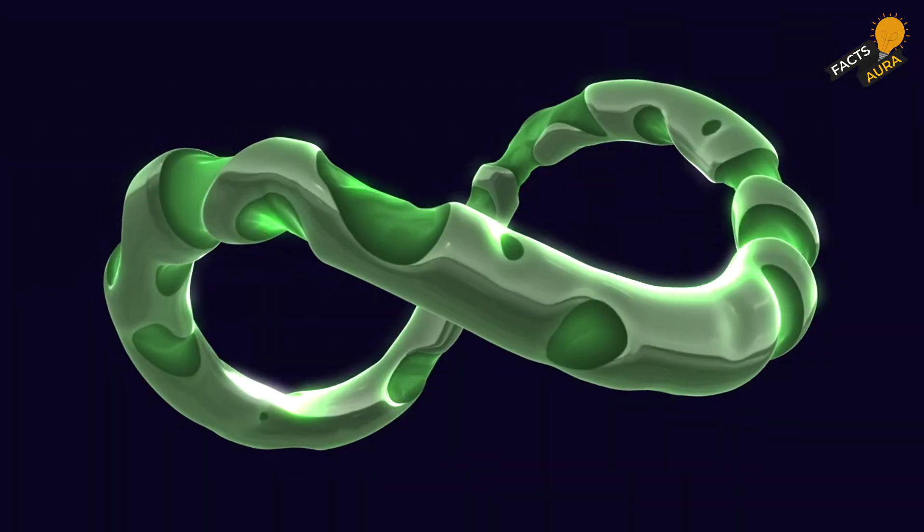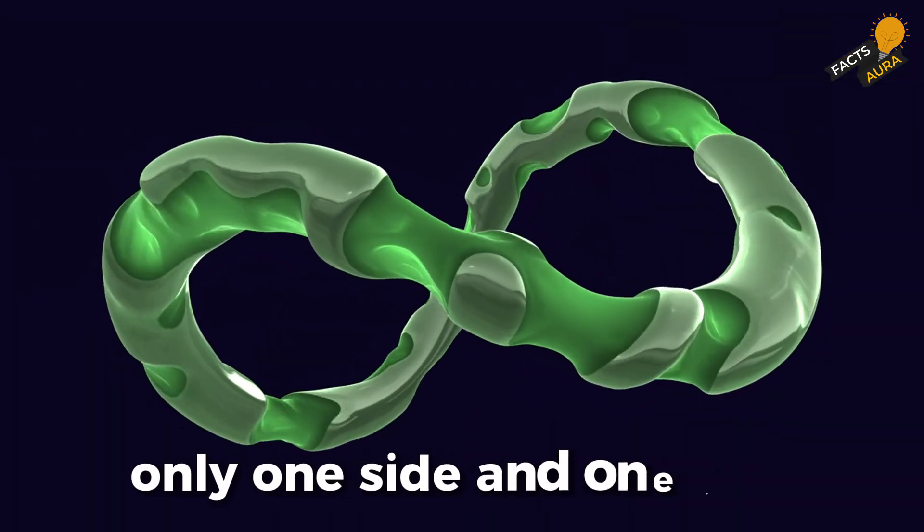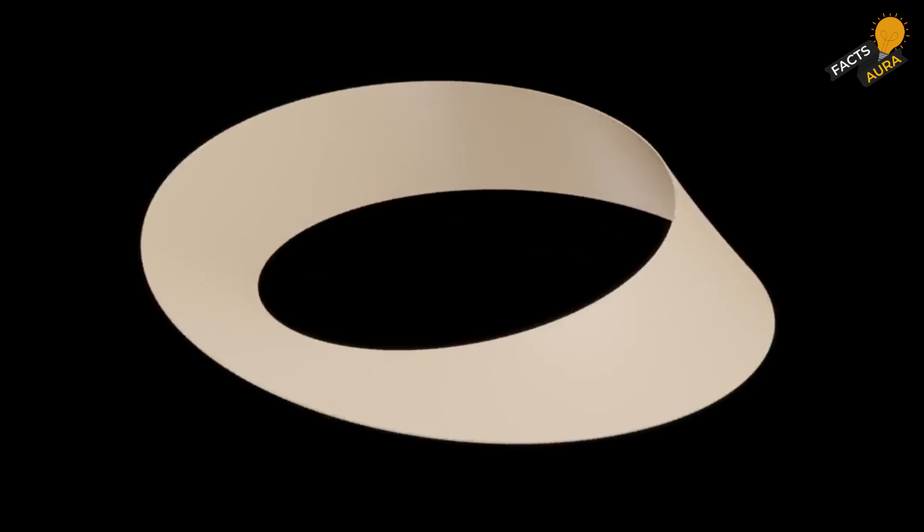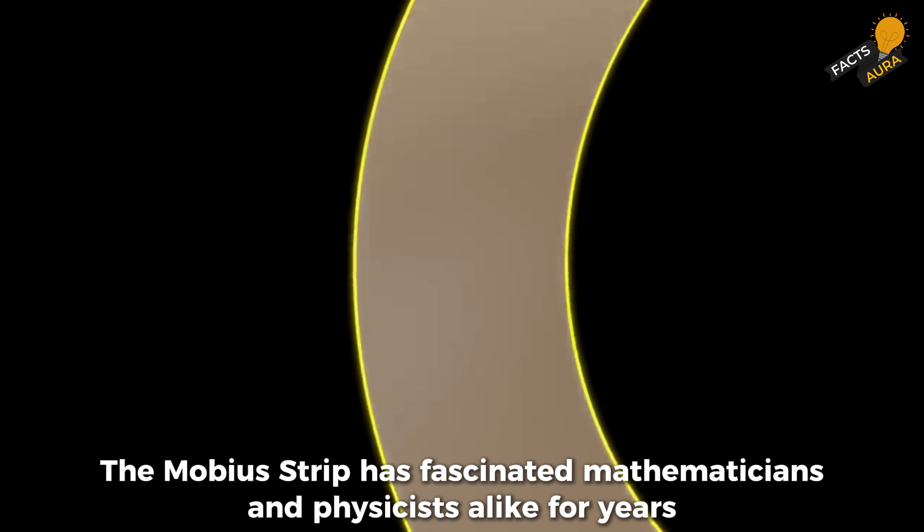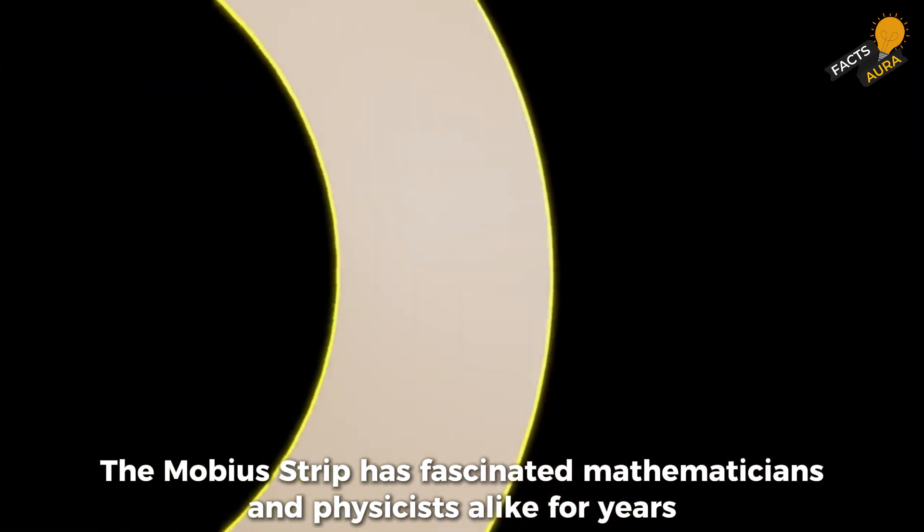Let's head to something closer to home, the Mobius Strip. This simple twisted shape has only one side and one edge, defying the conventional concept of inside and outside. The Mobius Strip has fascinated mathematicians and physicists alike for years.